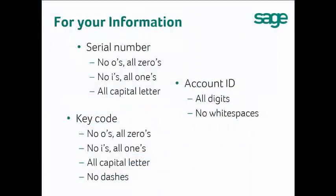For the serial number: there are no O's, all 0's; there are no I's, all 1's; and all letters are capitalized. For the account ID, they are all digits — remove any leading or ending white spaces. For the keycode: there are no O's, all 0's; there are no I's, all 1's; all letters are capitalized; and you don't need to type dashes.